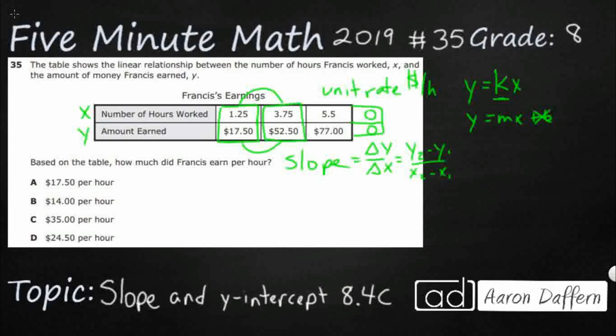I could do, let's see, my y coordinates. So I could do 52.5 minus 17.5. That's going to be my y coordinates. Then I could do my x coordinates, 3.75 minus 1.25. And so what I'm going to get is 35 over 2.5.